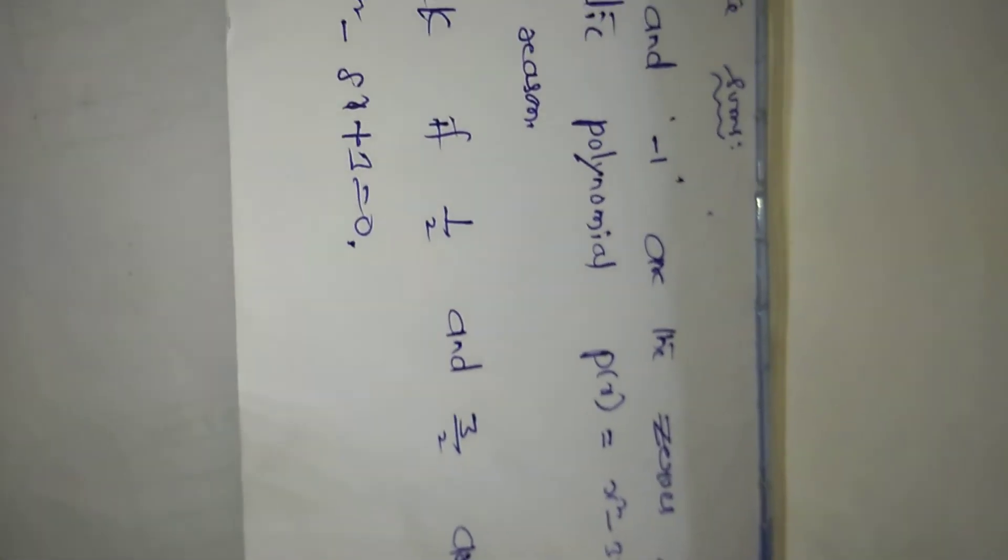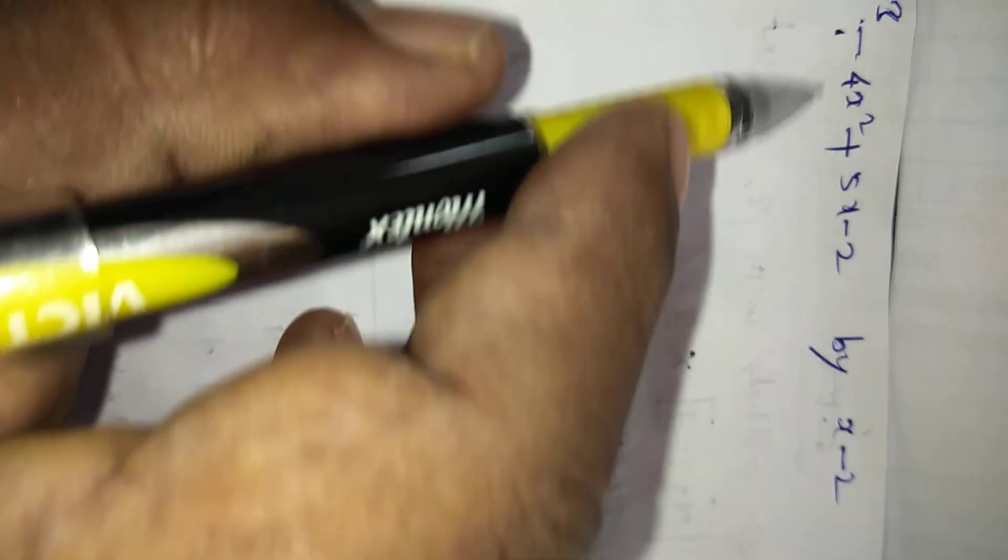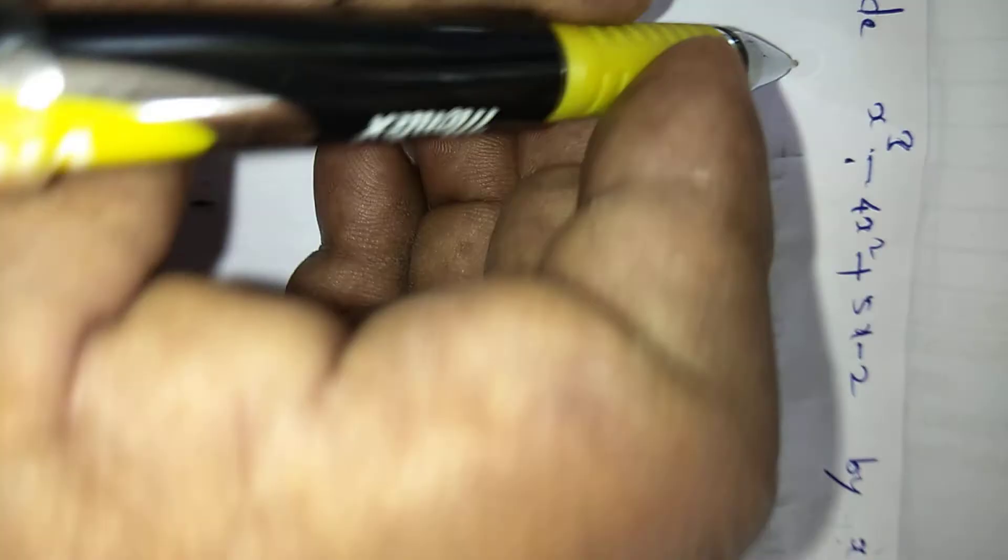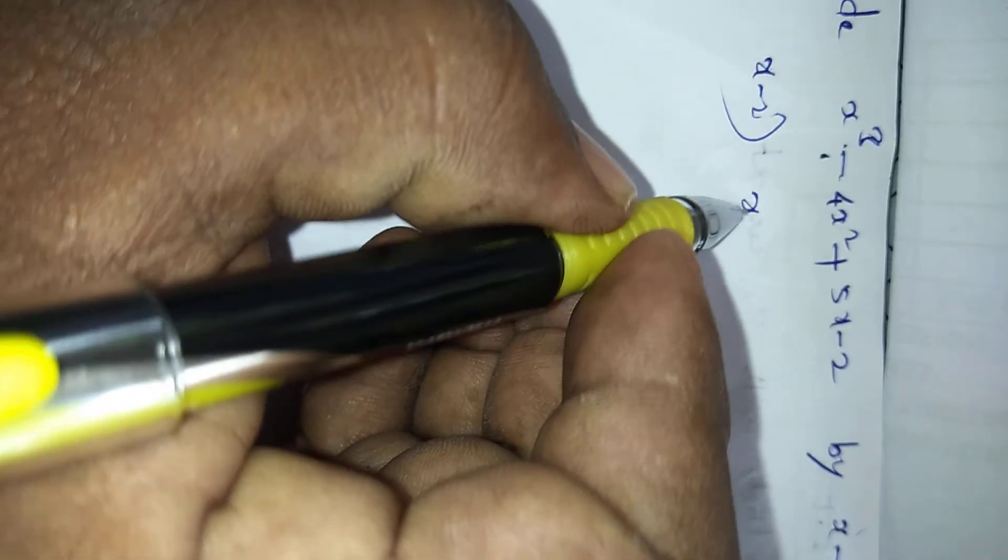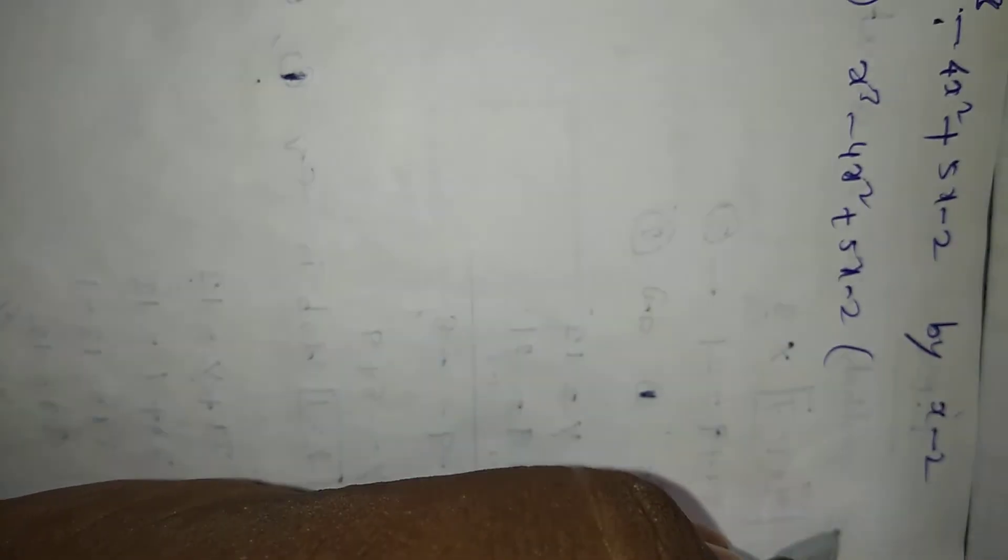Wish you good luck. Coming to the next question: divide x cube minus 4x squared plus 5x minus 2 by x minus 2. Solution: this is divisor, this is dividend. x minus 2 divisor, x cube minus 4x squared plus 5x minus 2 is the dividend.